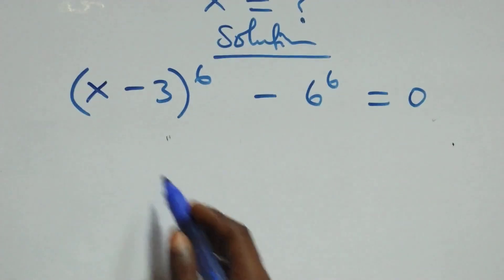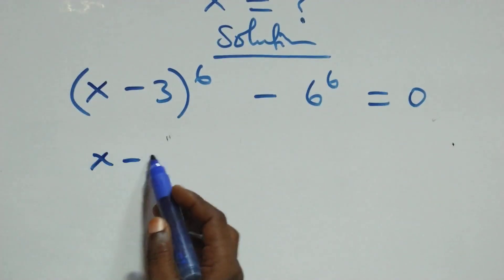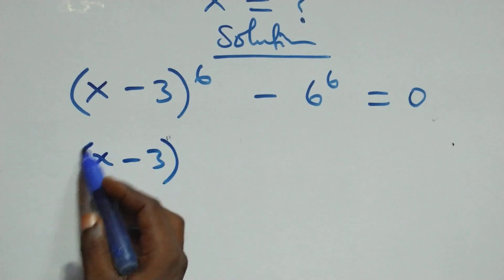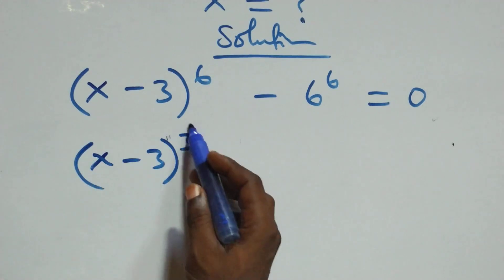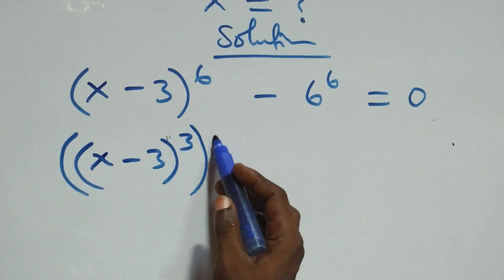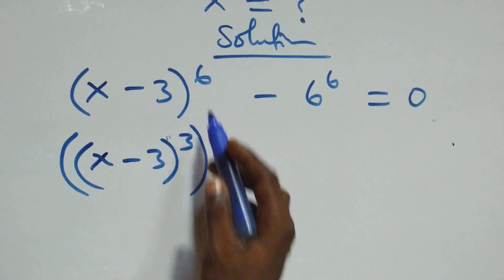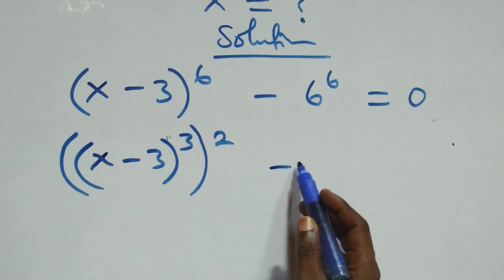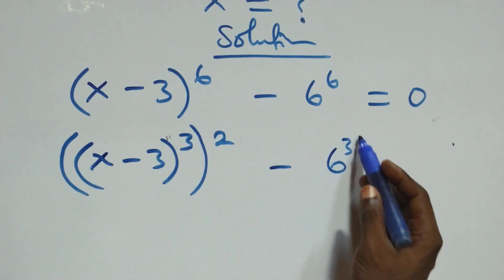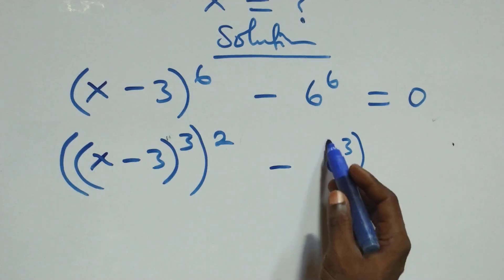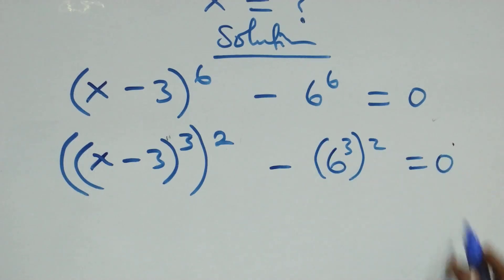The next step: we can write this as (x minus 3) raised to the power 3, then raised to the power 2, minus 6 raised to the power 3, raised to the power 2, equals to 0.